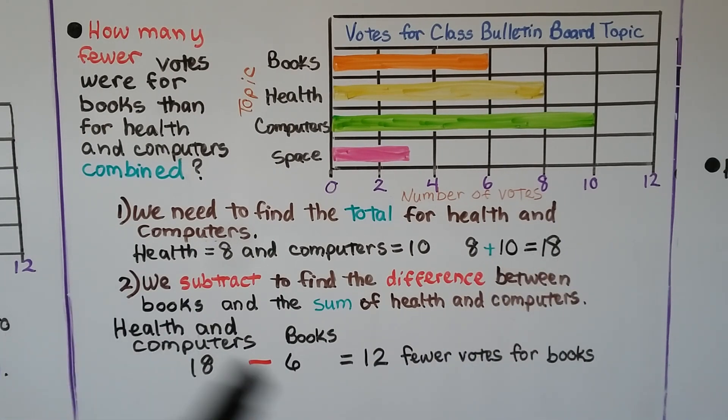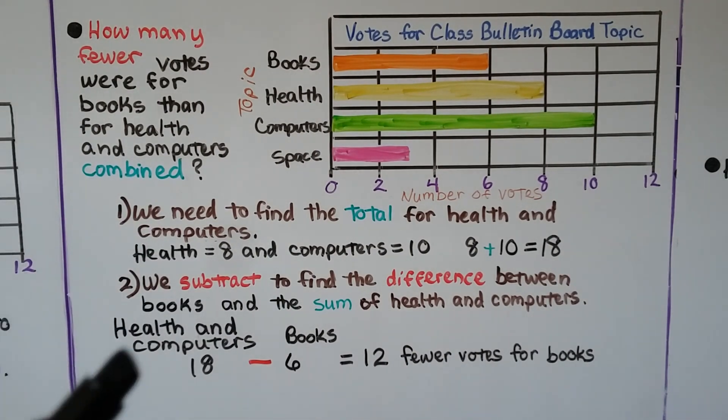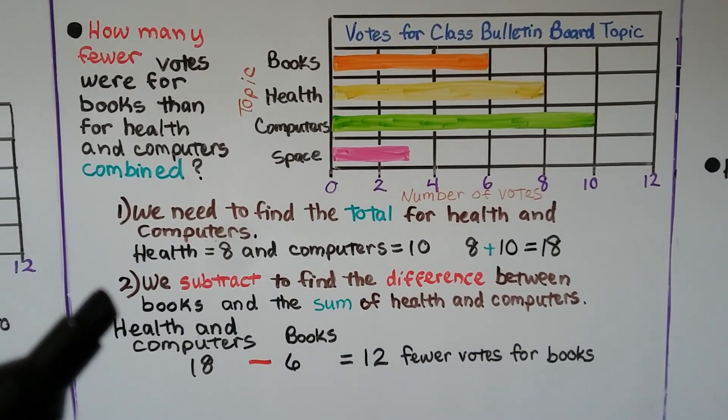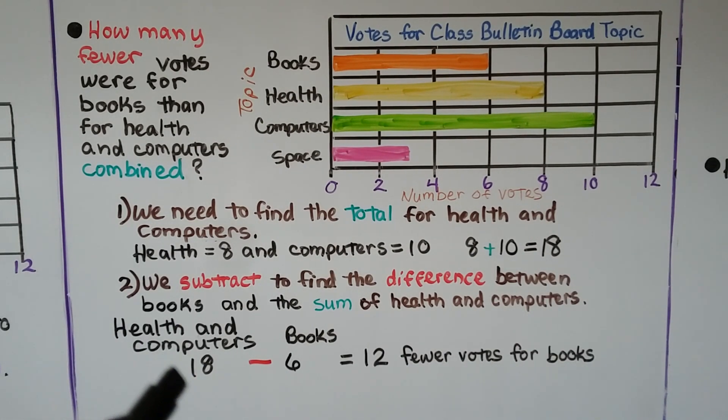Now we need to find the difference between 18 and the number of books. We subtract to find the difference between books and the sum of health and computers. Health and computers is eighteen, books is six. We do 18 - 6 = 12 fewer votes for books.